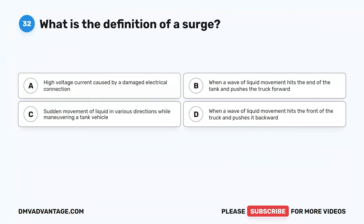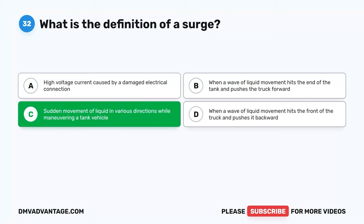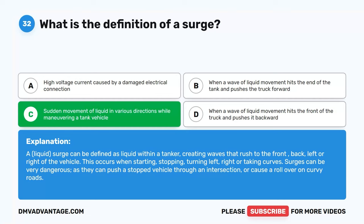Question 32. What is the definition of a surge? A. High voltage current caused by a damaged electrical connection. B. When a wave of liquid movement hits the end of the tank and pushes the truck forward. C. Sudden movement of liquid in various directions while maneuvering a tank vehicle. D. When a wave of liquid movement hits the front of the truck and pushes it backward. The correct answer is C. Liquid surge can be defined as liquid within a tanker creating waves that rush to the front, back, left, or right of the vehicle. This occurs when starting, stopping, turning left, right, or taking curves. Surges can be very dangerous, as they can push a stopped vehicle through an intersection or cause a rollover on curvy roads.